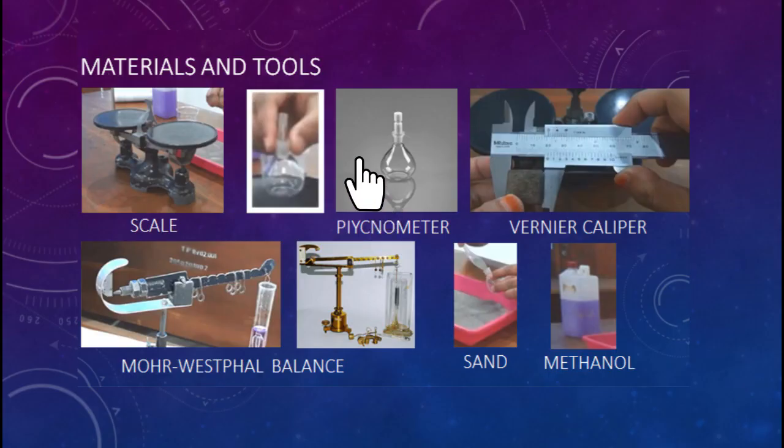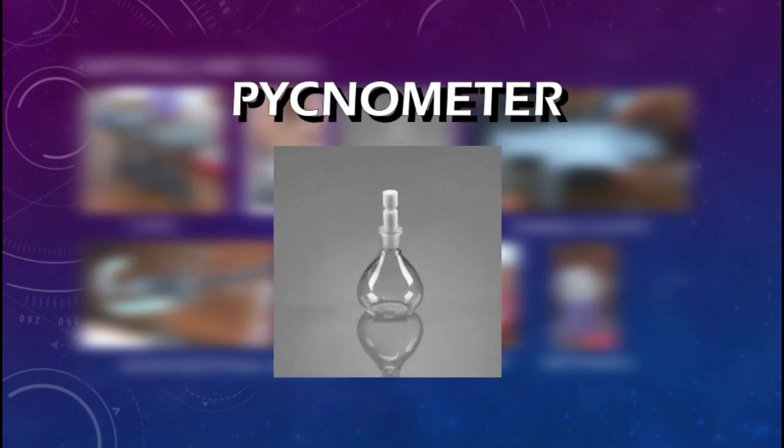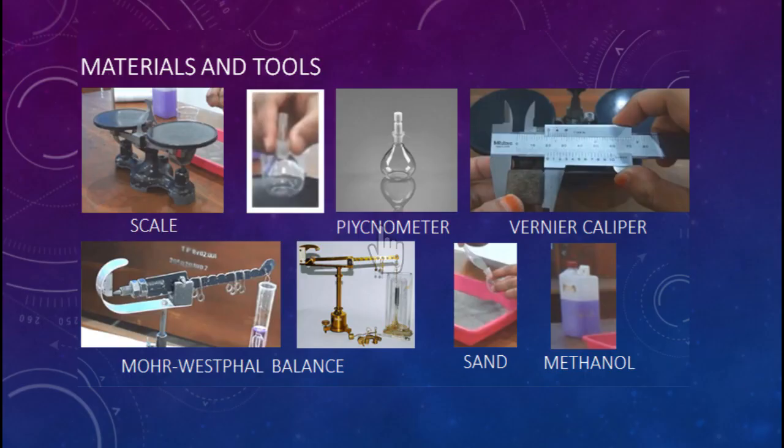Then we move right. This is the pycnometer. This is a kind of container, very fine containers made of glass with a very specific and very thorough volume. This is made of special glass, so the volume is not going to vary much when the temperature is varied.